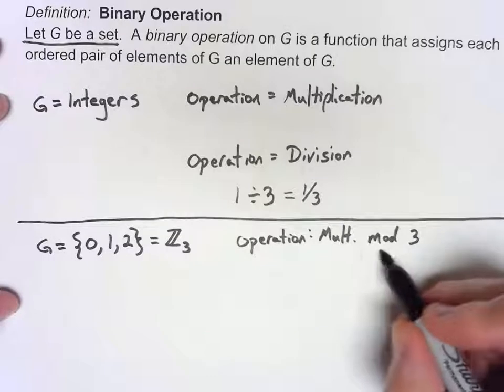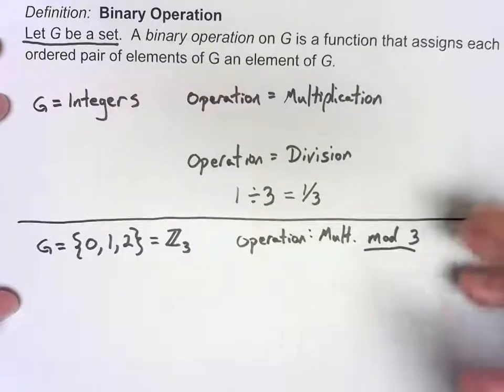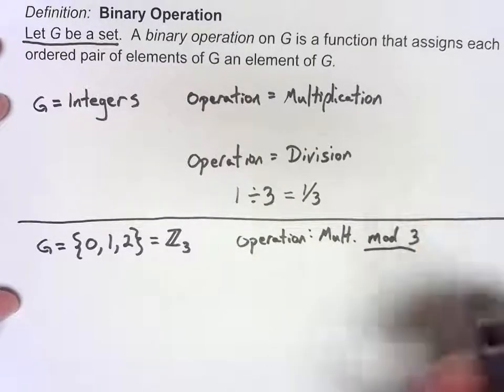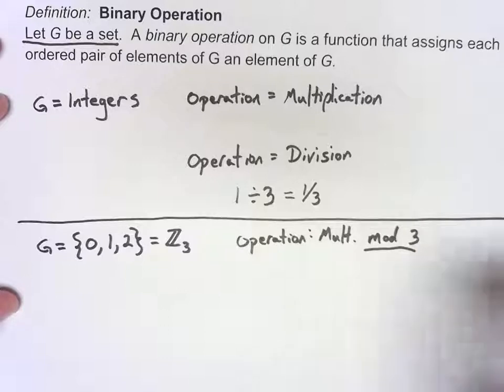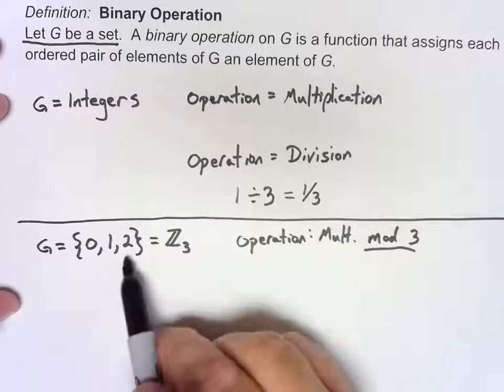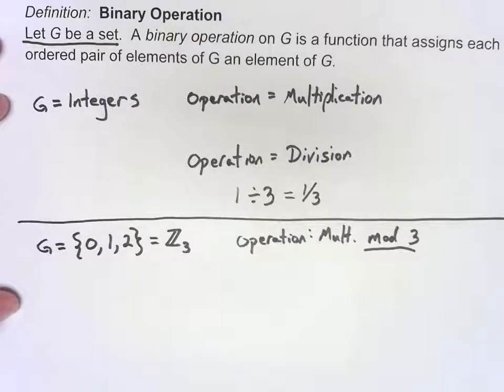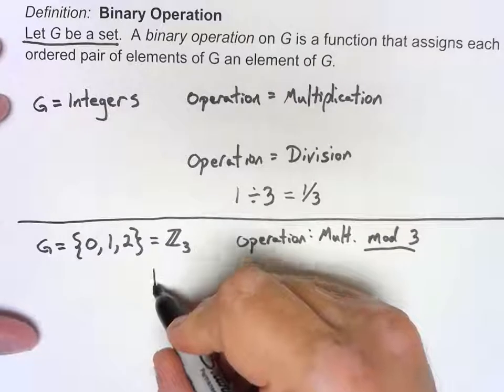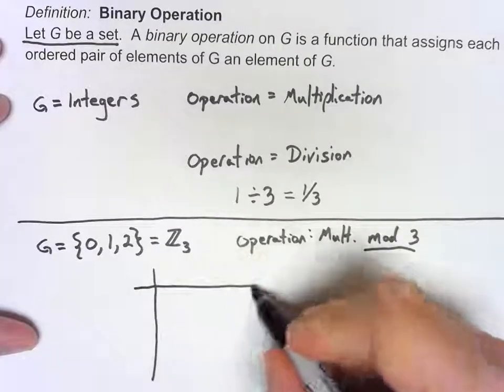Now what modular arithmetic does is it basically says if you get a number bigger than 3, then you're going to subtract 3 until you get something that's either 0, 1, or 2. Might be easiest to look at this just as going back to another Cayley table. There aren't very many elements here, so we can figure them all out.